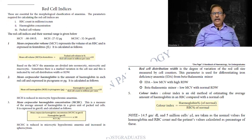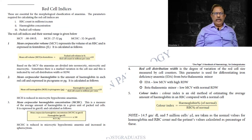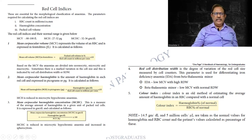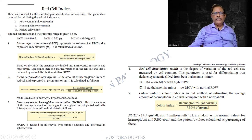Red cell indices — again, open your book and mark it. This may or may not be asked as a question; it's quite rare. But any of these parameters can be given in an MCQ — for example, a reduced MCV is classical of which conditions? All the various indices are supposed to be red cell indices. Kindly see them; it can be a short note or an MCQ.